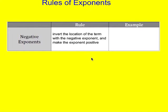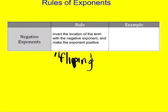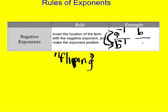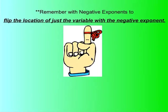You're going to invert the location of the term with the negative exponent, and once you do that, it makes the exponent positive. I like to think of that as flipping — you're just flipping the location. For example, if I have A to the negative first divided by B to the negative first, I'm going to flip where both are located. The B to the first comes up to the top, making it positive, and the A to the first goes to the bottom. So it flips and becomes B over A. Remember: you're only flipping variables with negative exponents — not coefficients or terms without negative exponents.